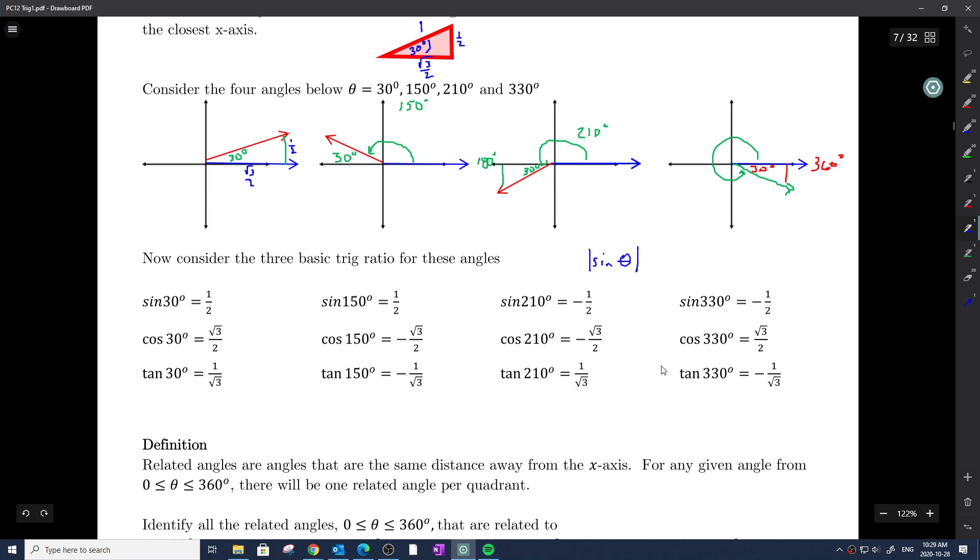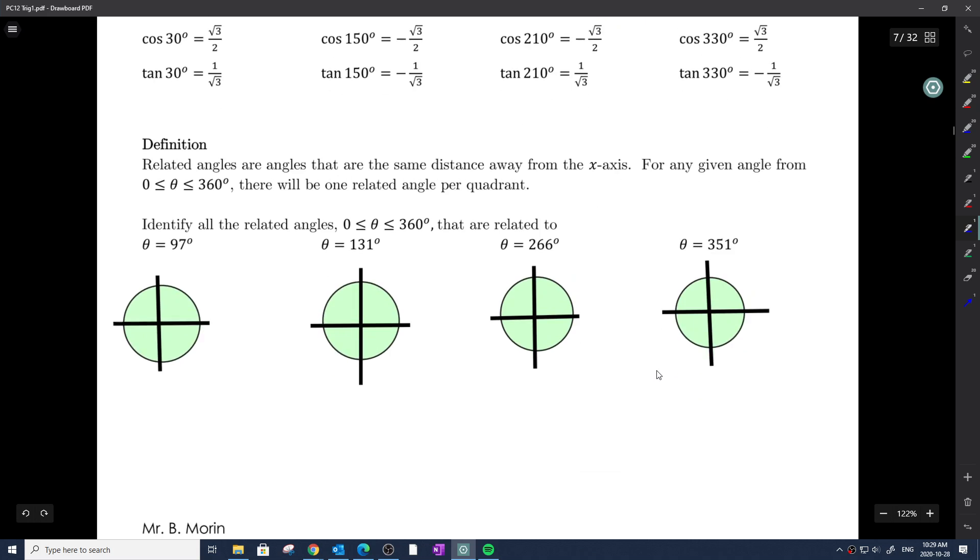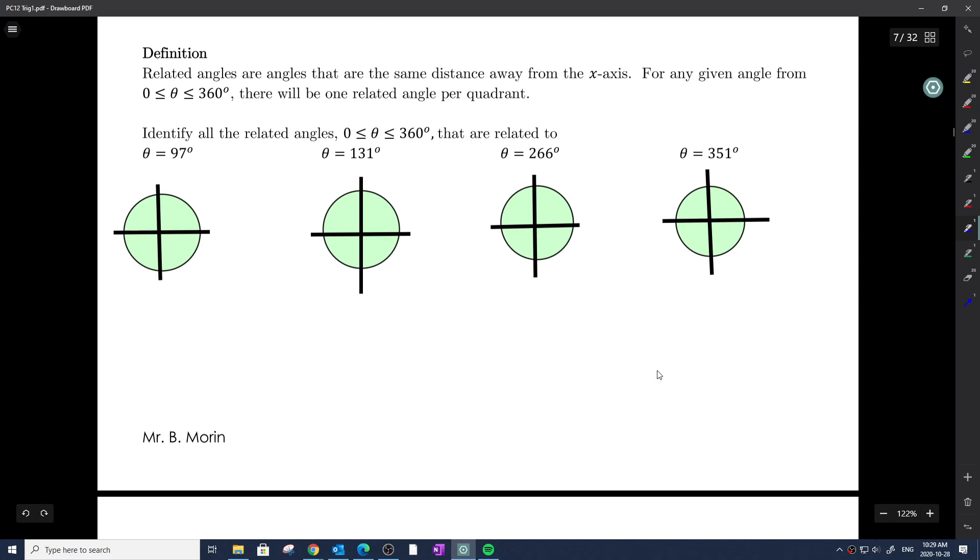You may be a little bit lost because I just dropped 12 trigonometric ratios. What do I want you to walk away from this? Notice that these angles are all 30 degrees away. Notice these related angles, same characteristics, have the same sine, cosine, and tangent values in absolute value. We just need to pick apart which one's positive, which one's negative. Definition: Related angles are angles that are the same distance away from the x-axis, or have the same reference angle. For any given angle from 0 to 360, there will be one related angle per quadrant.